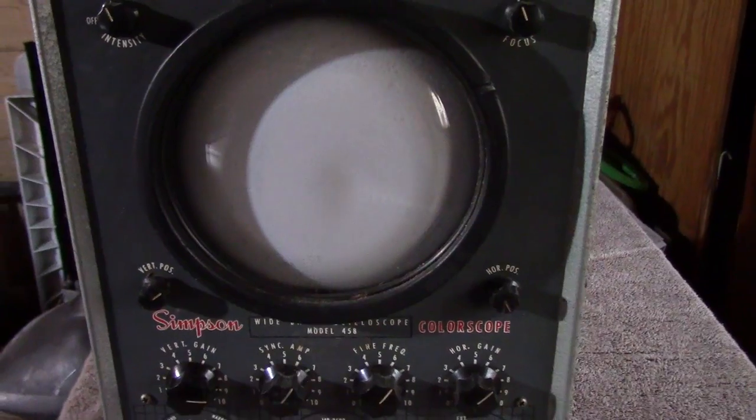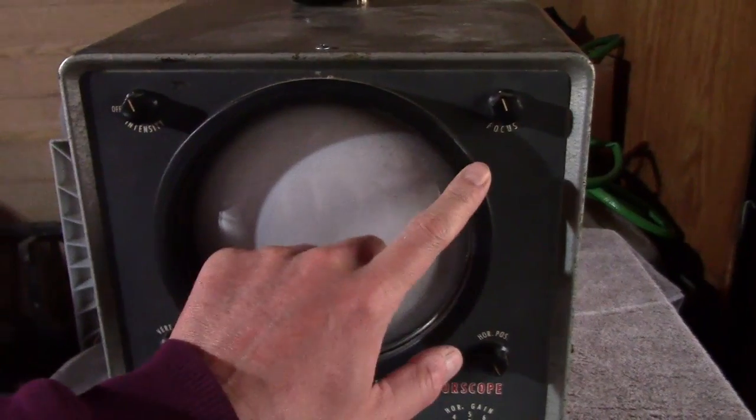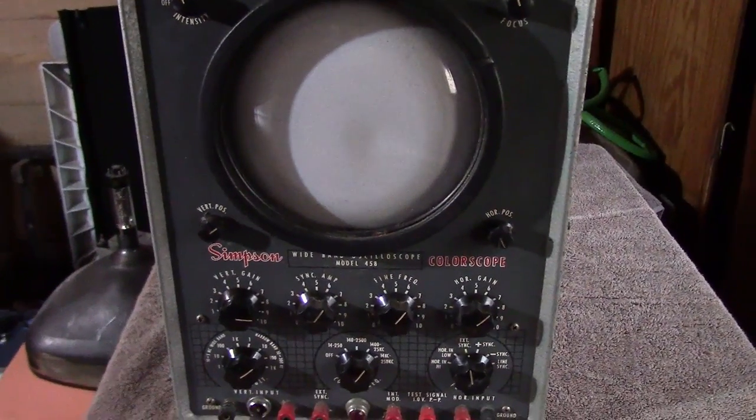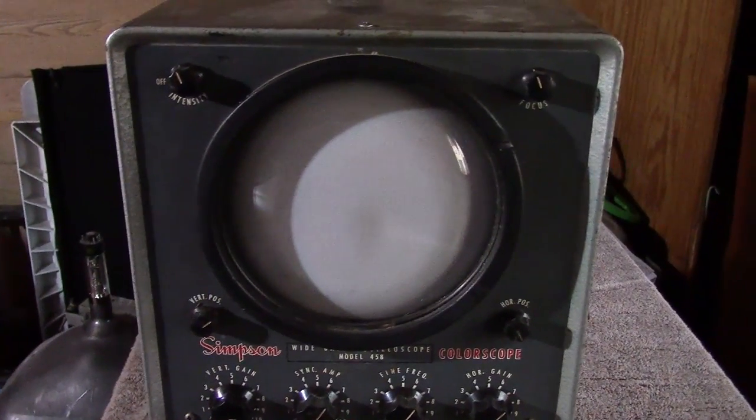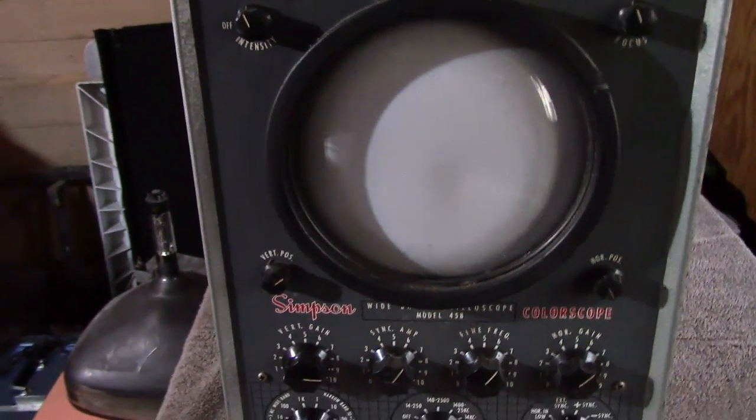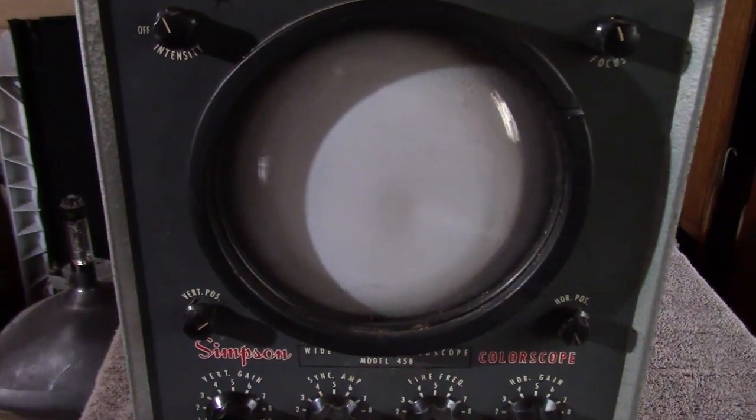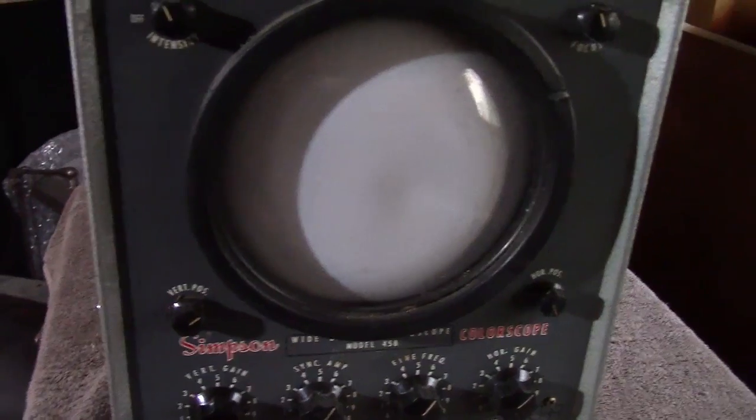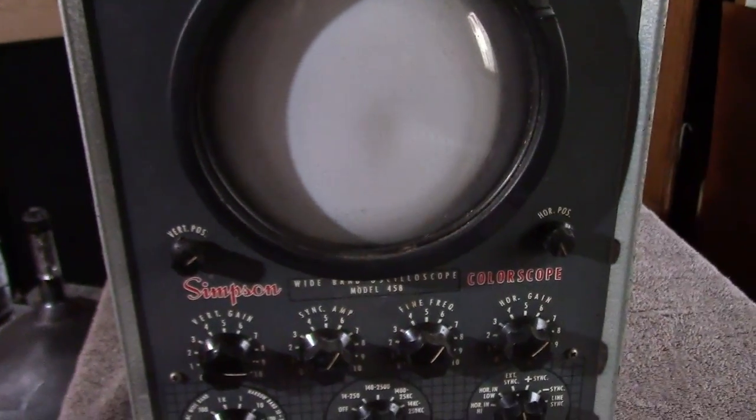Something else you may notice about this scope that's going to be common to all the scopes I've picked up is it's got a huge screen. It's actually seven inches, and that's what really caught my eye about all the models I selected. Not only are some of them fairly uncommon, they're all seven inch. So they used either a 7JP1, 7VP1, or 7GP1, all of which can be used in electrostatic TVs, either for testing or if you just happen to have a set that has a bad 7JP4, you can pop one of these into it. Also neat to have because you get a really big scope screen.